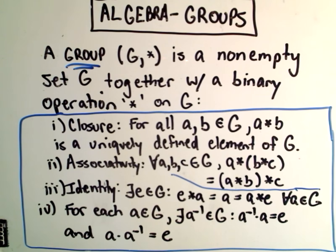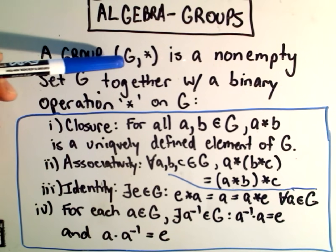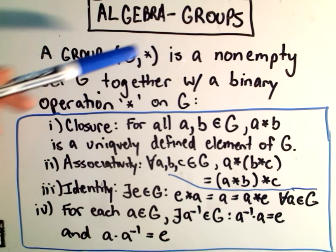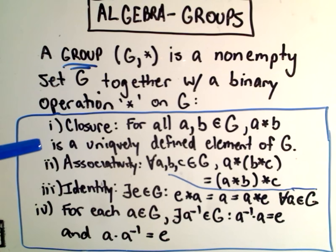In this video I'm going to talk about something from abstract or modern algebra, which is called a group. A group is a set of elements G with a binary operation star on G,